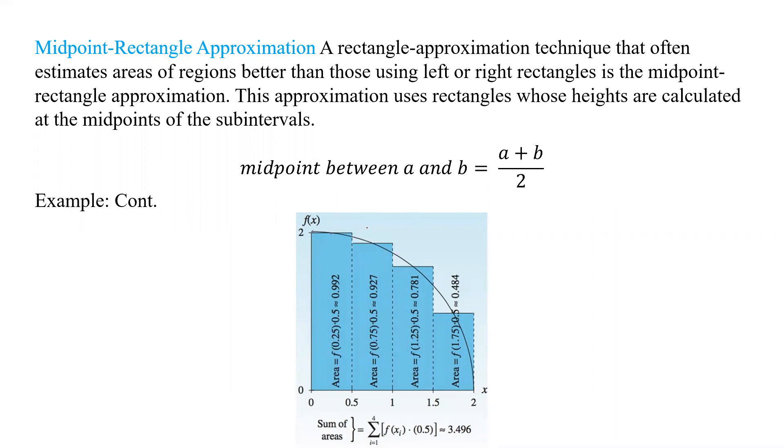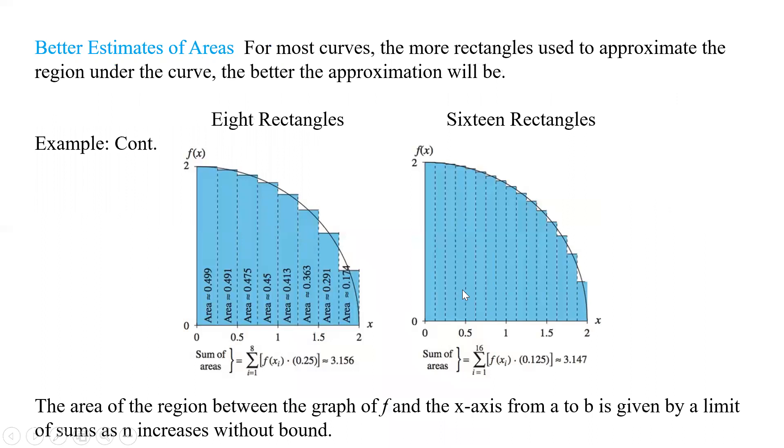Now again, this is part of the example we did with left and right with only four rectangles, and notice this one really doesn't help because that was the same as our left. So we're still way overestimating, but the key is we're using very few rectangles, but if we increase the number of rectangles, then things start to look a little bit better.